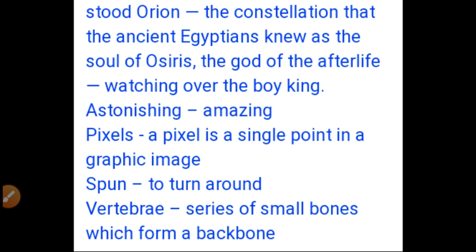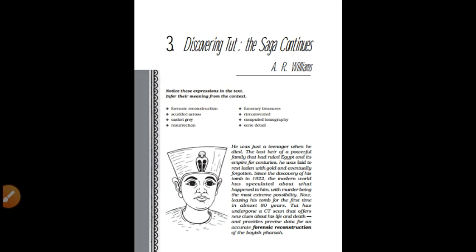'Stood Orion' means watching over the boy king. 'Astonishing' means amazing. 'Pixels' — a pixel is a single point in a graphic image. 'Spun' means to turn around. 'Vertebra' means a series of small bones which form a backbone. That's all, children.